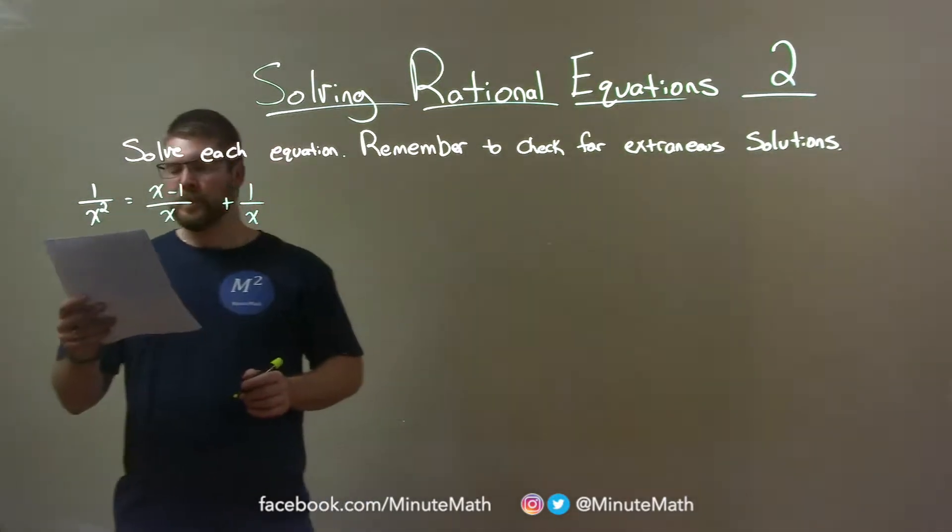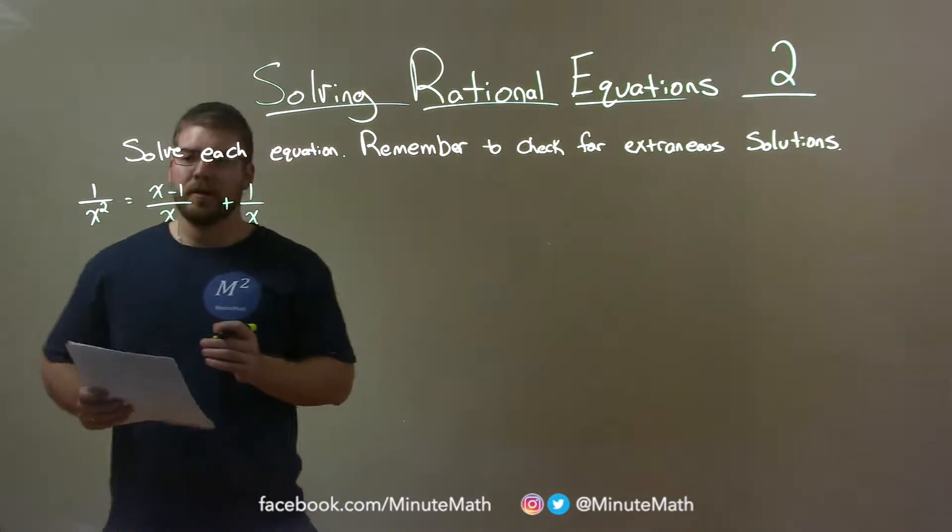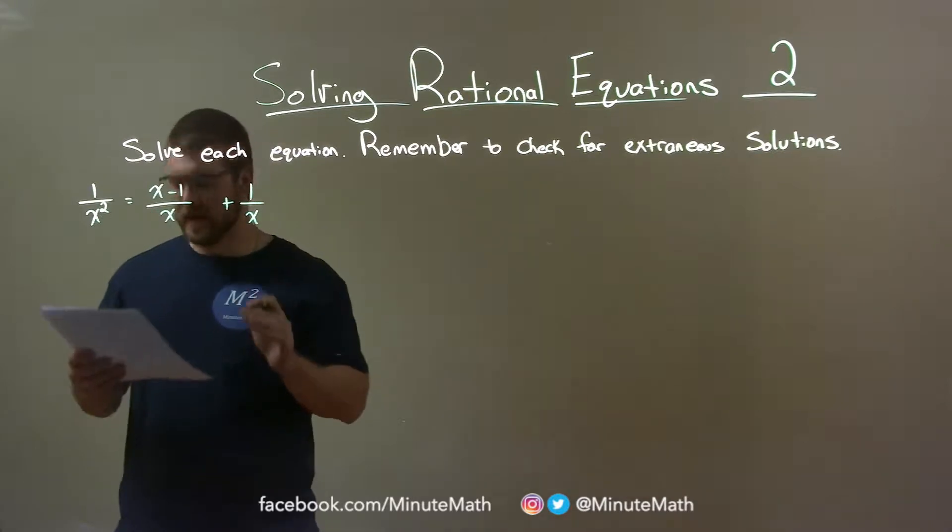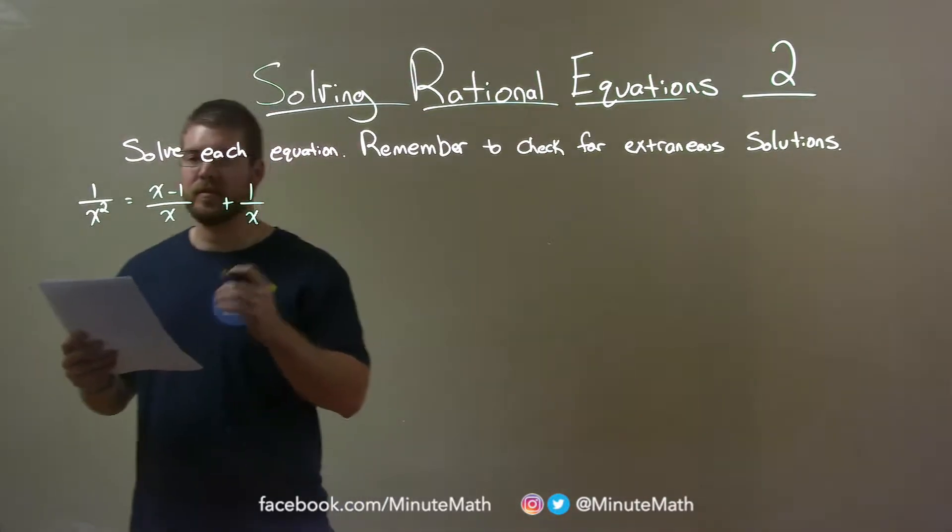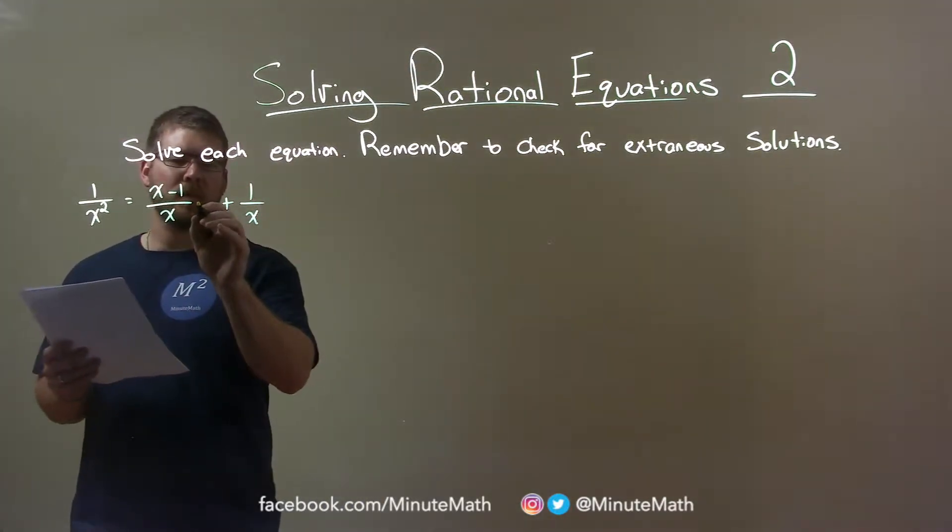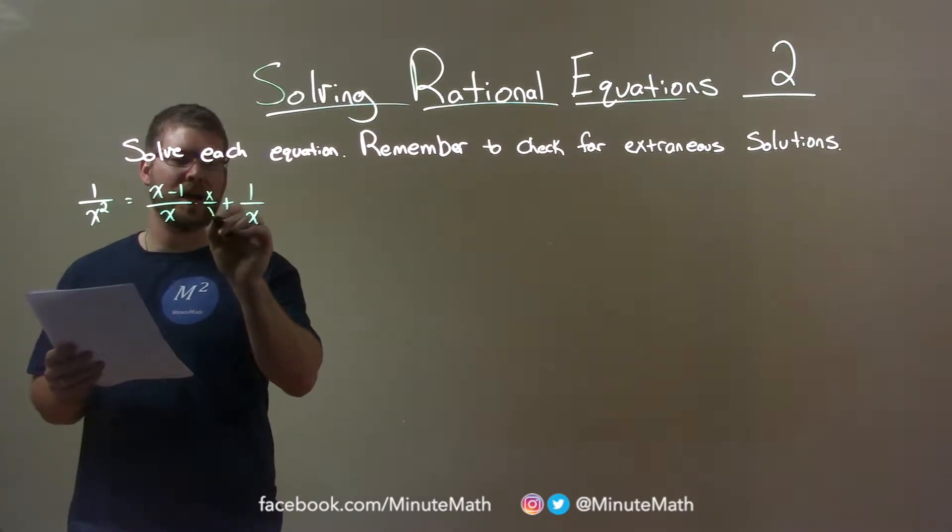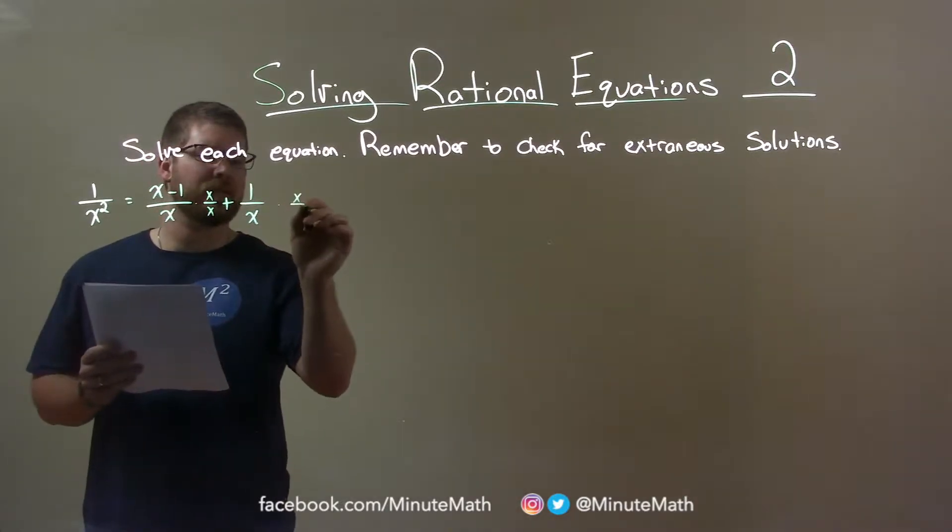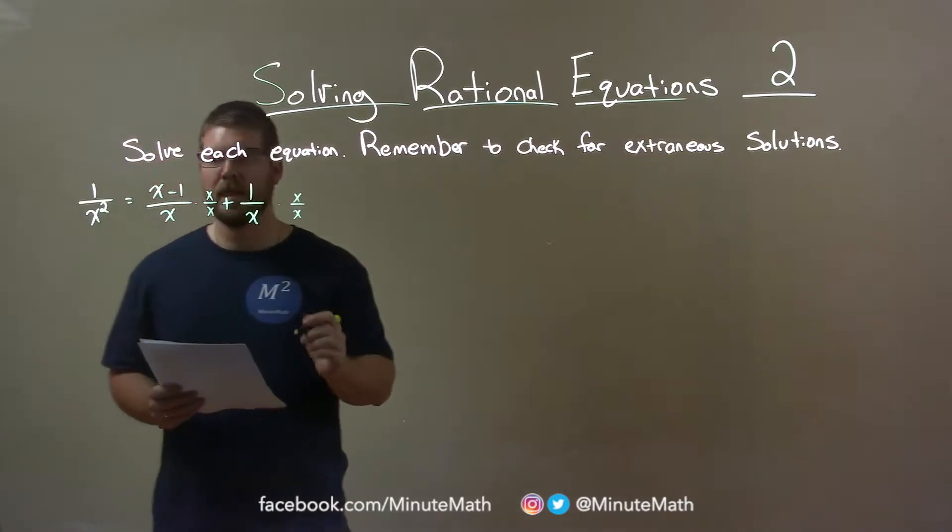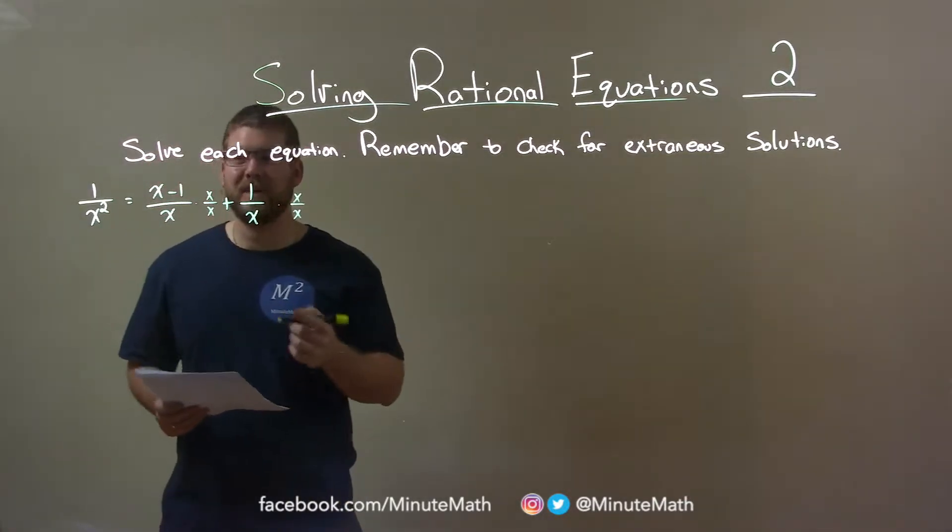Alright. Well, first thing I want to do here is have a common denominator across the board. To do that, I'm going to multiply this part here by x over x and this part by x over x as well. That gives us a denominator of x squared.